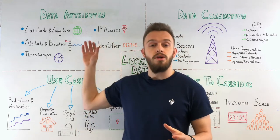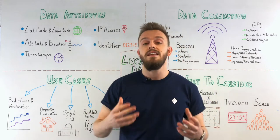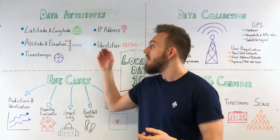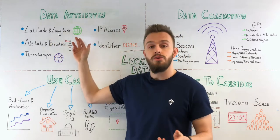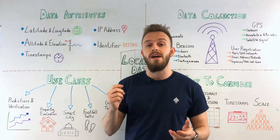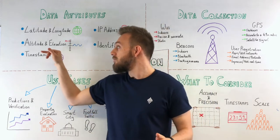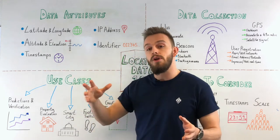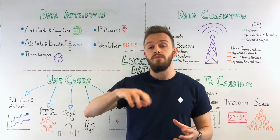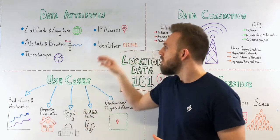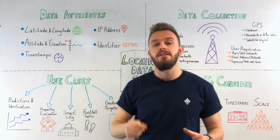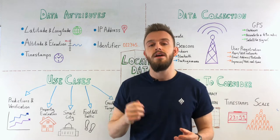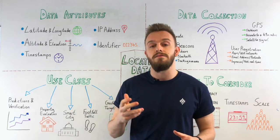Looking at some of the most common location data attributes, you can see that it's anything that tells us a specific location at a specific time. This could be its coordinates, helped by latitude and longitude, which is also assisted through a technique called horizontal accuracy. Altitude and elevation tell us the height above or below sea level, and timestamps help us to either track movement over time or look at continuously moving objects. Identifiers are either a string of digits or a piece of code that are unique to a device or a signal, helping it stand out and be identified among all the rest.